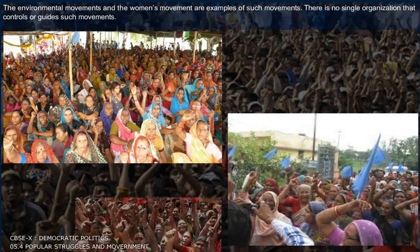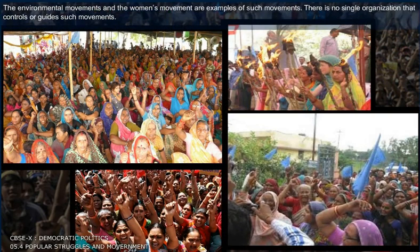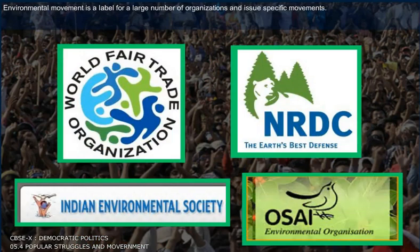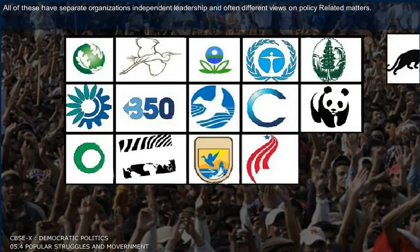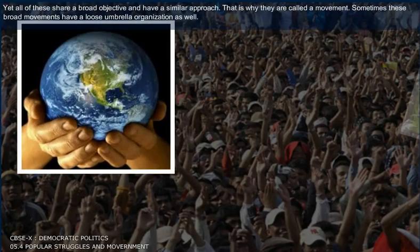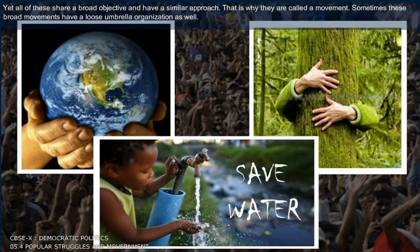The environmental movements and the women's movement are examples of such movements. There is no single organization that controls or guides such movements. The environmental movement is a label for a large number of organizations and issue-specific movements. All of these have separate organizations, independent leadership, and often different views on policy-related matters. But all of these share a broad objective and have a similar approach — that is why they are called a movement.